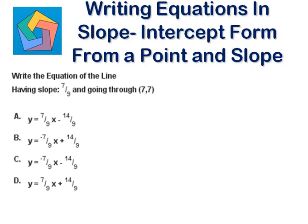Whenever we need to write the equation of a line through a slope and a given point, we will use the formula y minus y1 equals m times x minus x1. And if we need to write this in slope-intercept form, it is y equals mx plus b. This is the slope-intercept form.